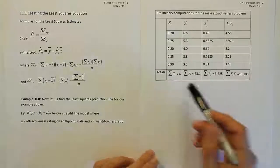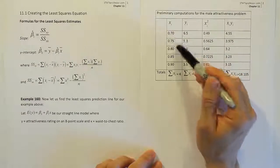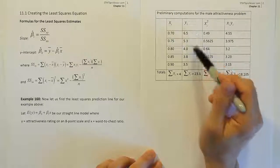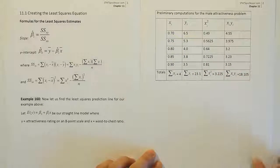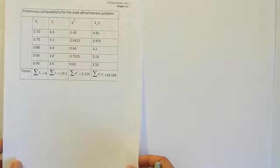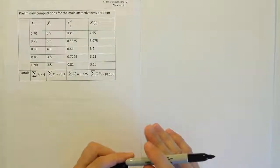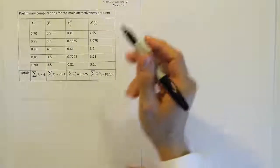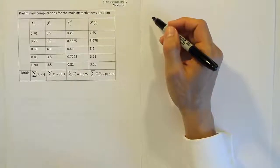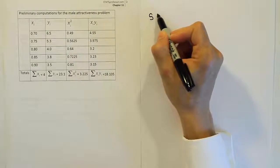Let's take these numbers they've provided us in the preliminary calculations. This is the males in the study, this is the males' waist-to-chest ratio, and this is the women's attractiveness rating on an eight-point scale given to those particular waist-to-chest ratios. Let's use that information to plug into our formulas to come up with our model, the regression line that should fit this data the best.